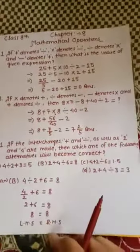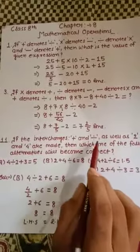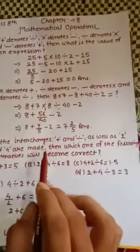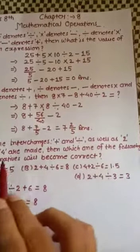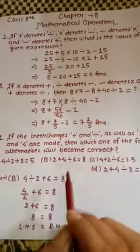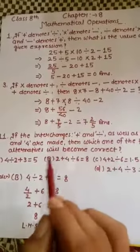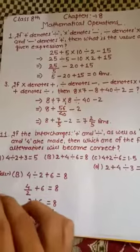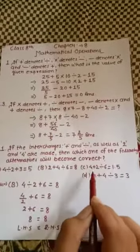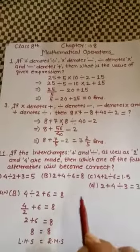Now come to the next question. It says: if the interchange of plus and divide, as well as 2 and 4, are made, then which of the following alternatives will become correct? In the given expression, we have to first replace plus with divide and 2 with 4, then cross-check all four given options — replacing plus with divide and 4 with 2 — to find which expression gives the correct answer.